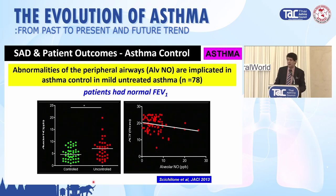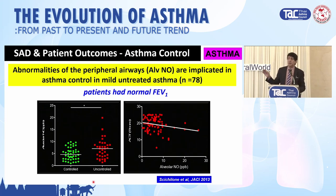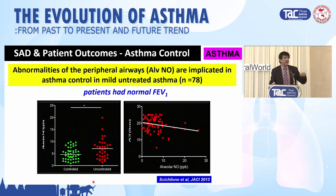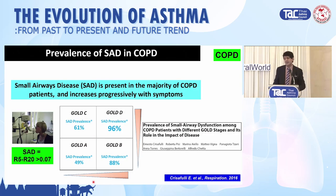On the right-hand graph, the higher the small airways inflammation, the lower the ACT score — a direct correlation. These patients had normal FEV1 and were naive, mild, untreated asthma patients. The point is: small airways disease relates to symptoms even in mild asthma.